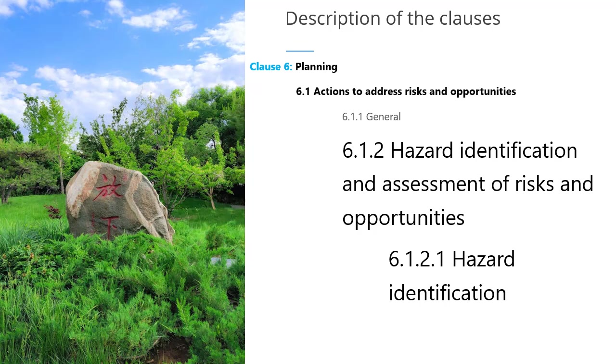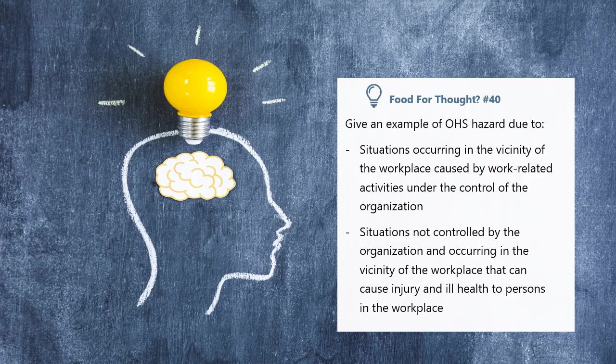To ensure that risks are reduced as far as reasonably practicable, the organization must identify hazards based on the activities mentioned in this clause in addition to any other organization-specific activities. Give an example of an OHS hazard due to situations occurring in the vicinity of the workplace caused by work-related activities under the control of the organization, and situations not controlled by the organization occurring in the vicinity of the workplace that can cause injury and ill-health to persons in the workplace.